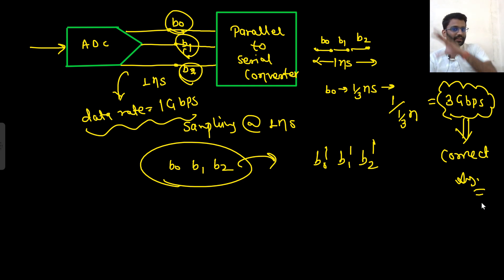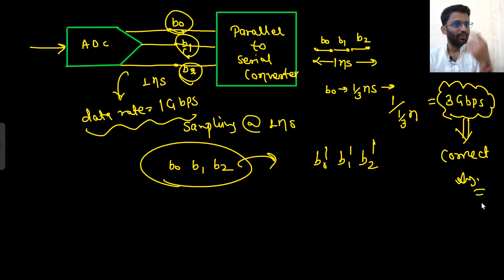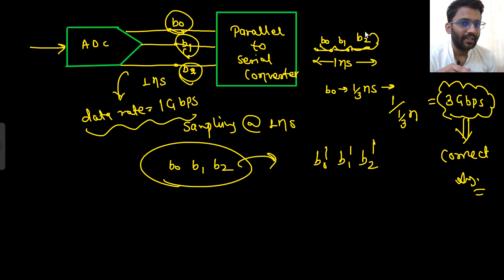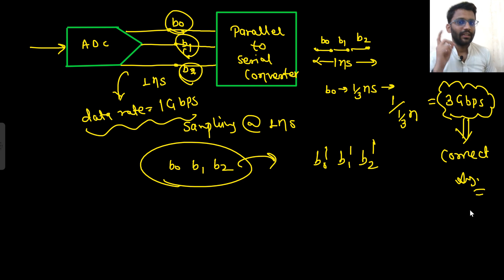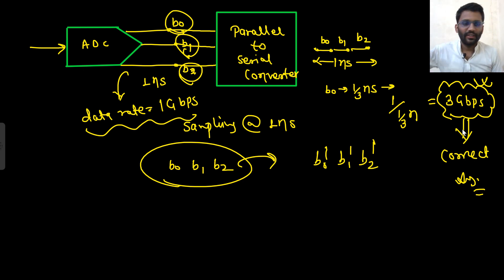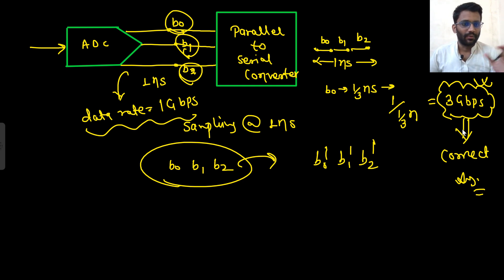So 3 Gbps is the correct answer as per me, because the output is serial — in 1 nanosecond you receive 3 bits one after another, each lasting 1/3 ns. The data rate is therefore 3 gigabits per second. No offense to anyone — the teacher was solving live in front of many students, which takes courage, and I really appreciate that. I just wanted to provide the correct solution.